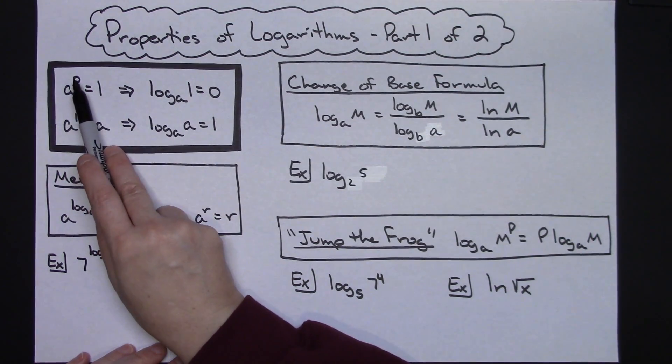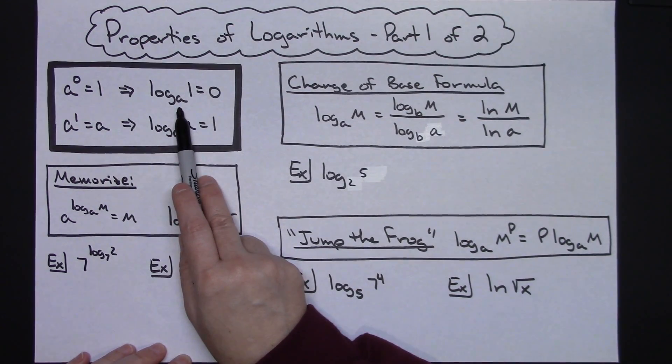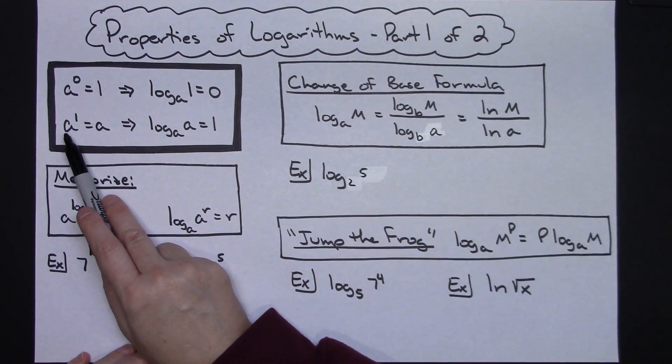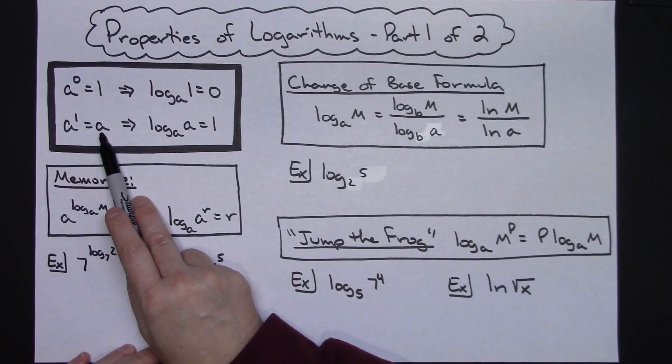So because any number raised to the zero power is always one, then we know the log of one to any base has to equal zero. Same thing for this one. The base is a raised to the first power, and it will always equal a. So converting that into logarithmic form, the log of a with the base of a has to equal one.